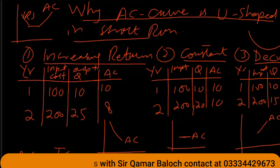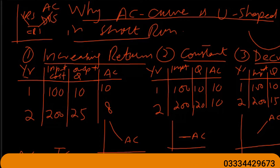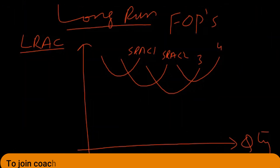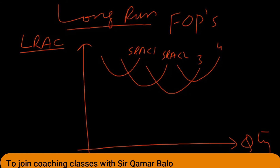The average cost is U-shaped in the short-run period. In the short run, some factors of production are fixed. In the long run, all factors of production are variable — we can purchase new land, new machinery, and new technology. In economics, we don't count years to determine short-run or long-run; instead we consider whether all four factors of production are variable.